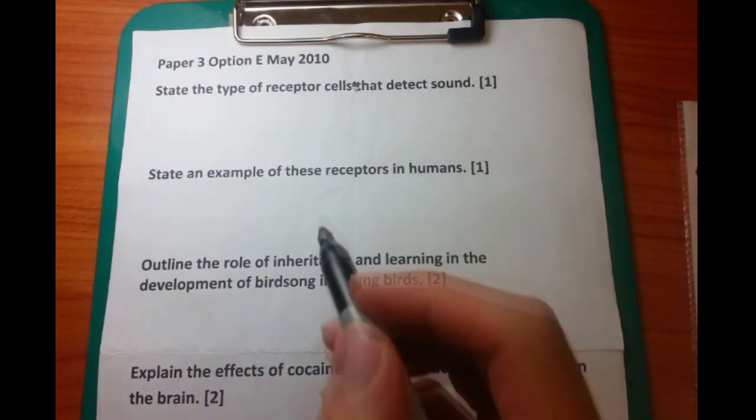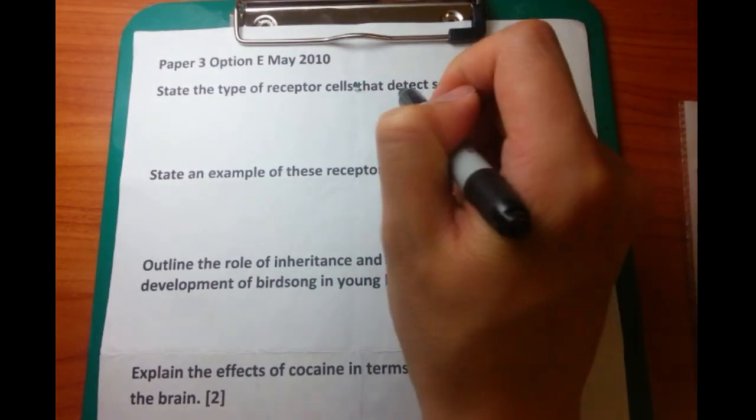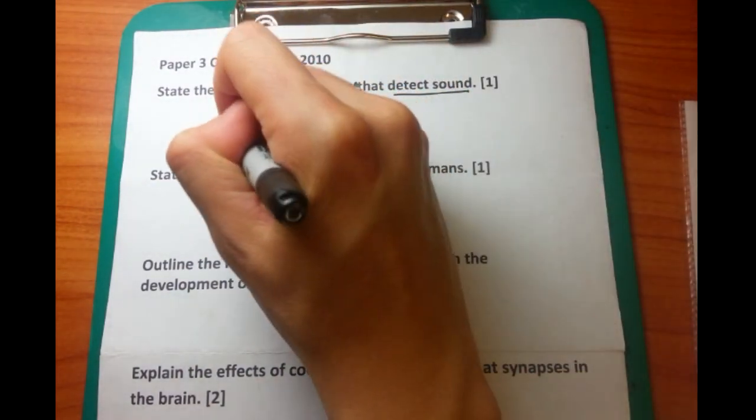Option E papers are questions that I really like doing. So let's look at this one. State the type of receptor cells that detect sound.